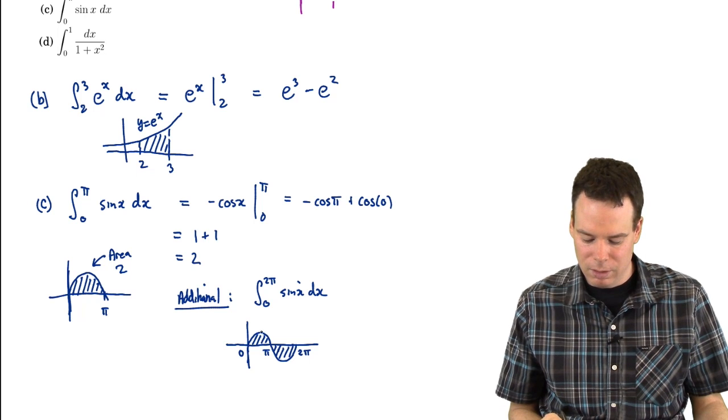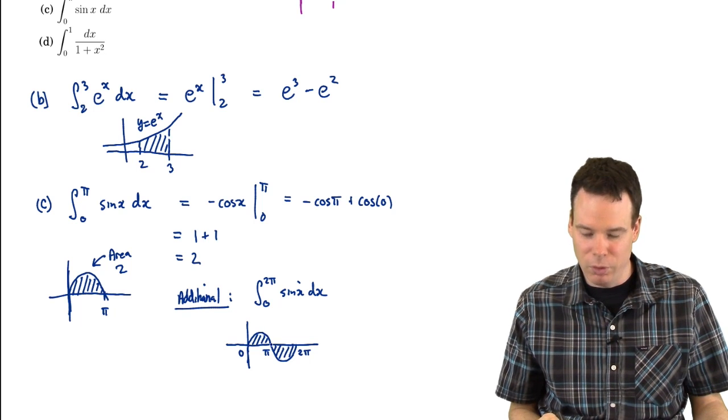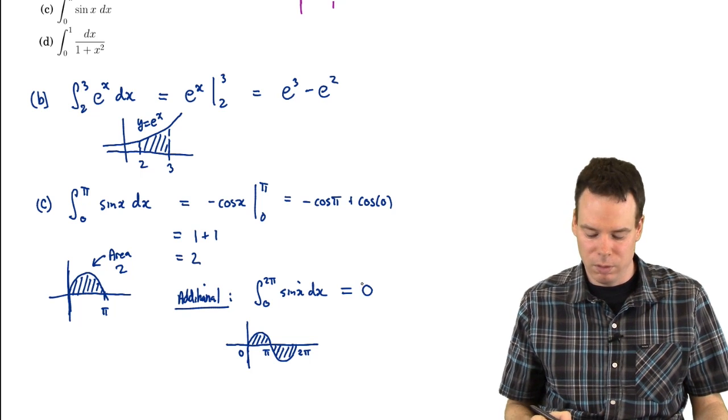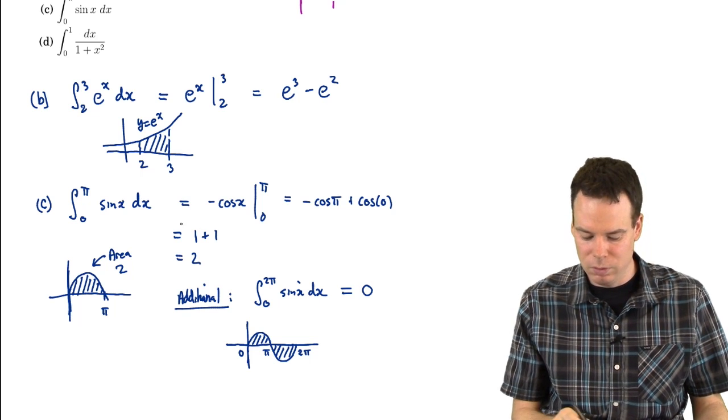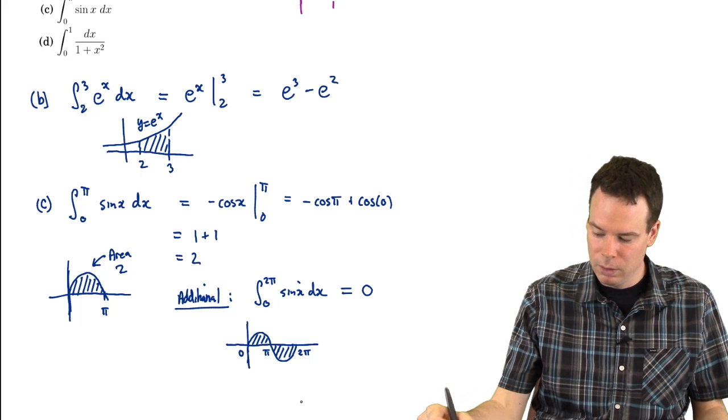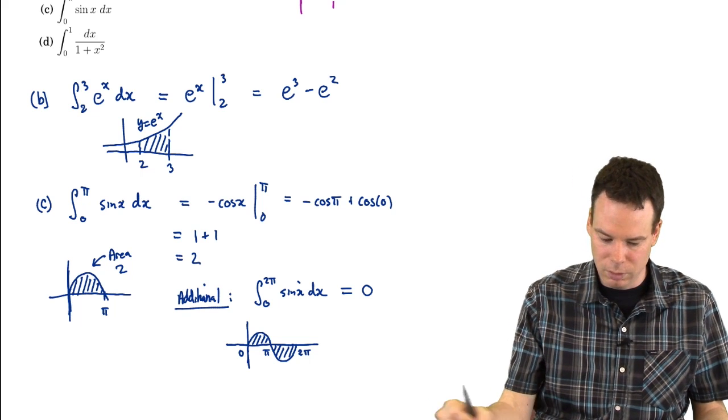It's the area of the stuff above minus the area of the stuff below. Those would cancel off and so you'd get an integral of 0. And if you work out the integral using the fundamental theorem of calculus and antiderivatives, you'll get a value of 0 as well. So just an additional thing to note.